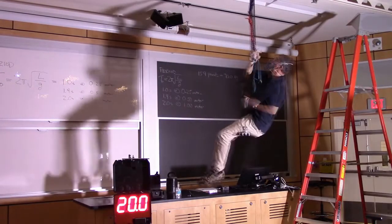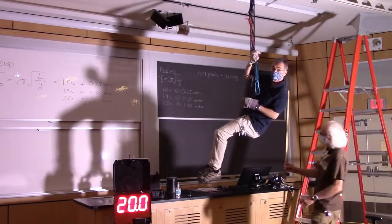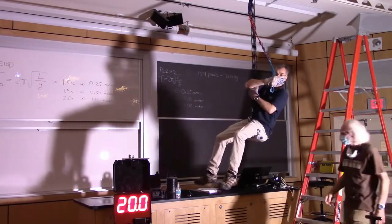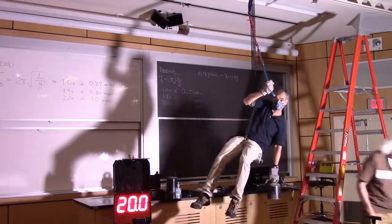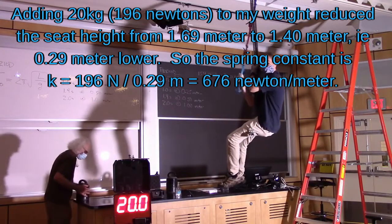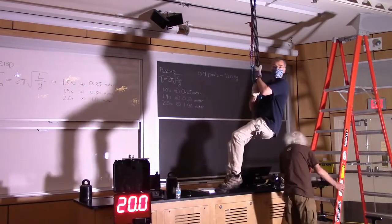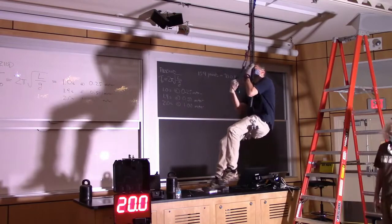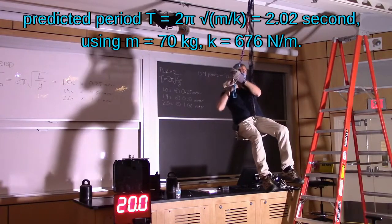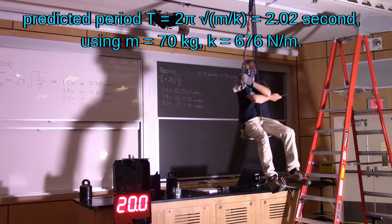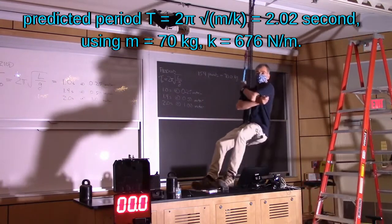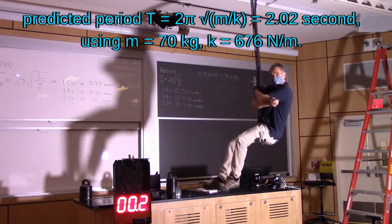We're going to see how far the chair is off the ground with just me on the chair — the number is 1.69 meters. Now I'm going to grab a 20-kilogram mass and see how far down I go: 1.40 meters off the ground. We'll work out our inferred spring constant from that. My mass is 70.0 kilograms — I just stepped on the bathroom scale. Now we have enough to calculate the spring constant and figure out the period of oscillation. We'll count how long it takes to go 10 cycles. [counts 0 through 10] That was 19.3 seconds for 10 oscillations.